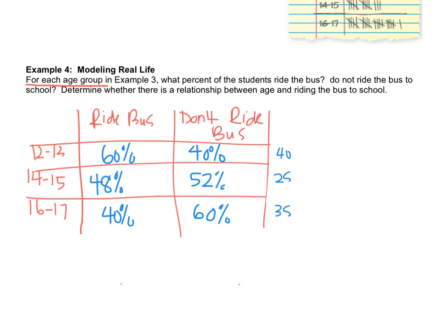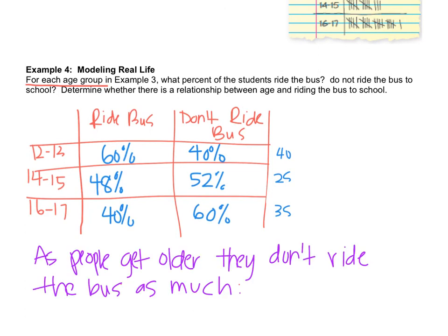So the last thing says determine whether there is a relationship between age and riding the bus to school. As you can see, as the ages get larger, as people get older, they're riding the bus to school less. And that may make sense because they have siblings who can drive them or they drive themselves or their friends drive them. But to answer the question, whether there is a relationship between age and riding the bus to school, the answer is yes. As people get older, they are not riding the bus as much.